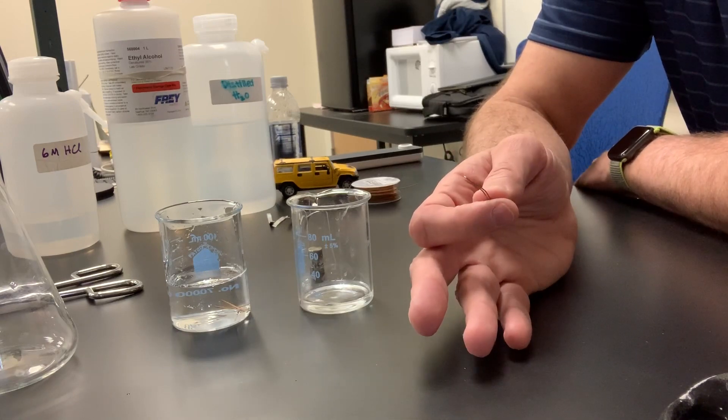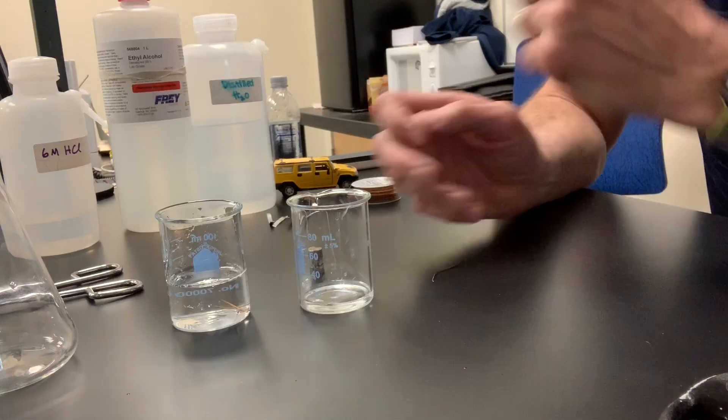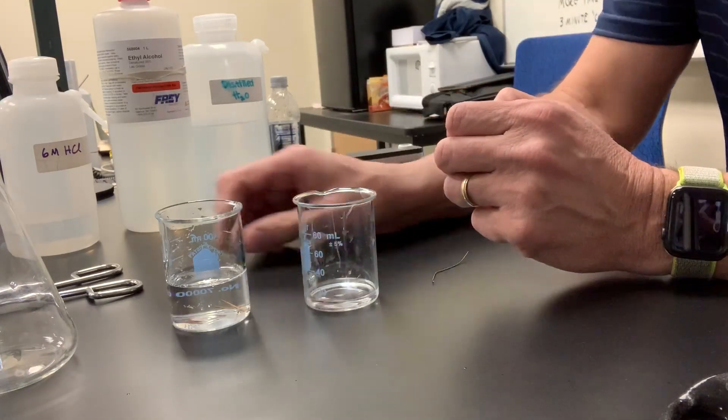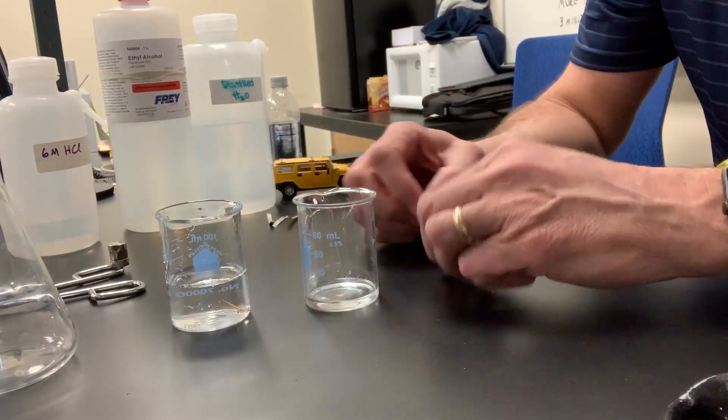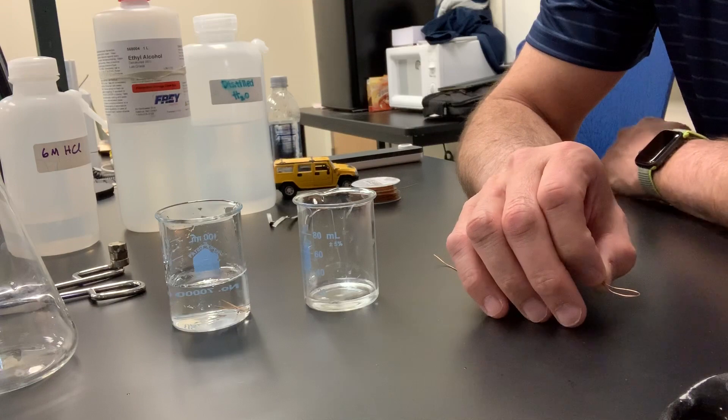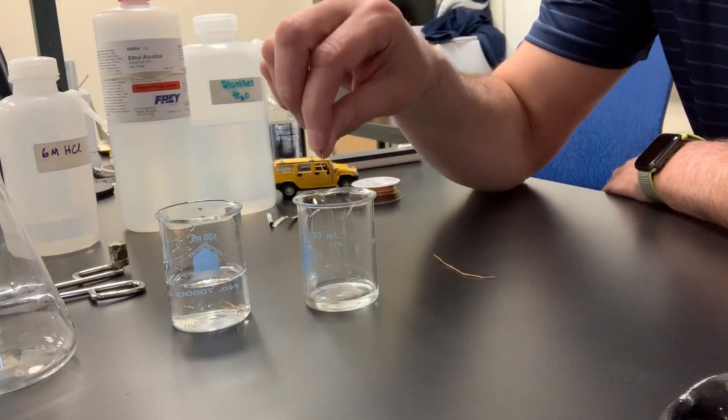we're going to look for gas being given off. Maybe there will be a color change. Maybe it will get hot. Or maybe a precipitate would form. We've seen those observations before in class. So let's add the copper metal, see if we see any of those, to determine whether or not it will react with hydrochloric acid.